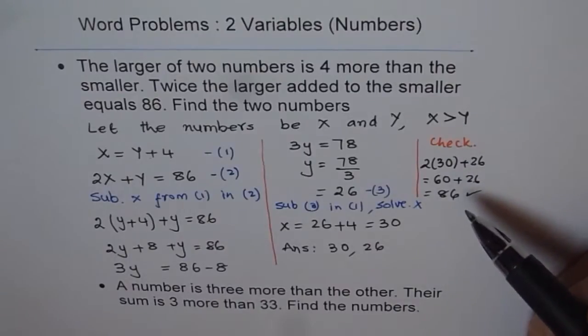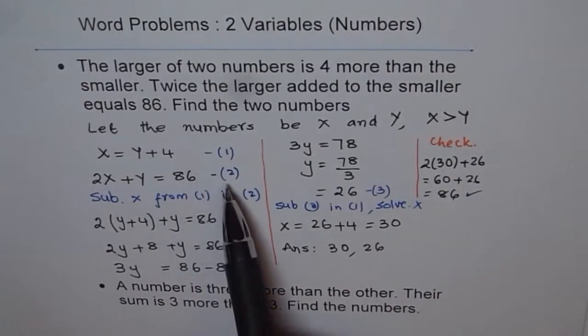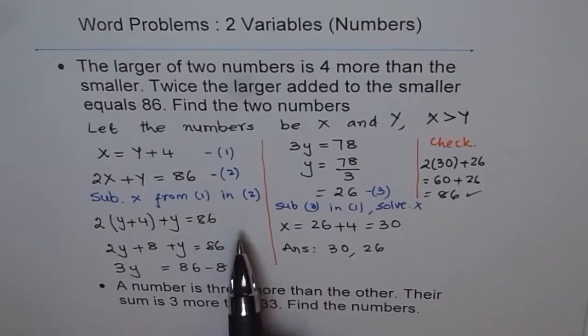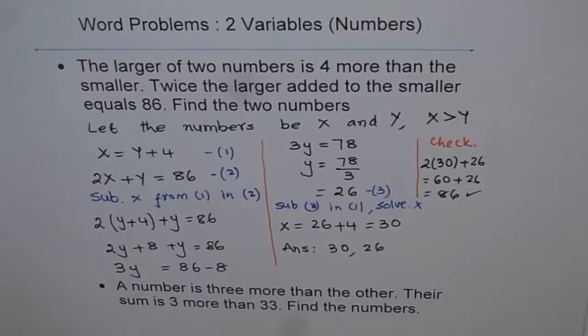If you are solving for two variables, you should have two equations. Number your equations. It helps in communication. And then, you can follow the method of substitution or elimination to get the value of the defined variables.